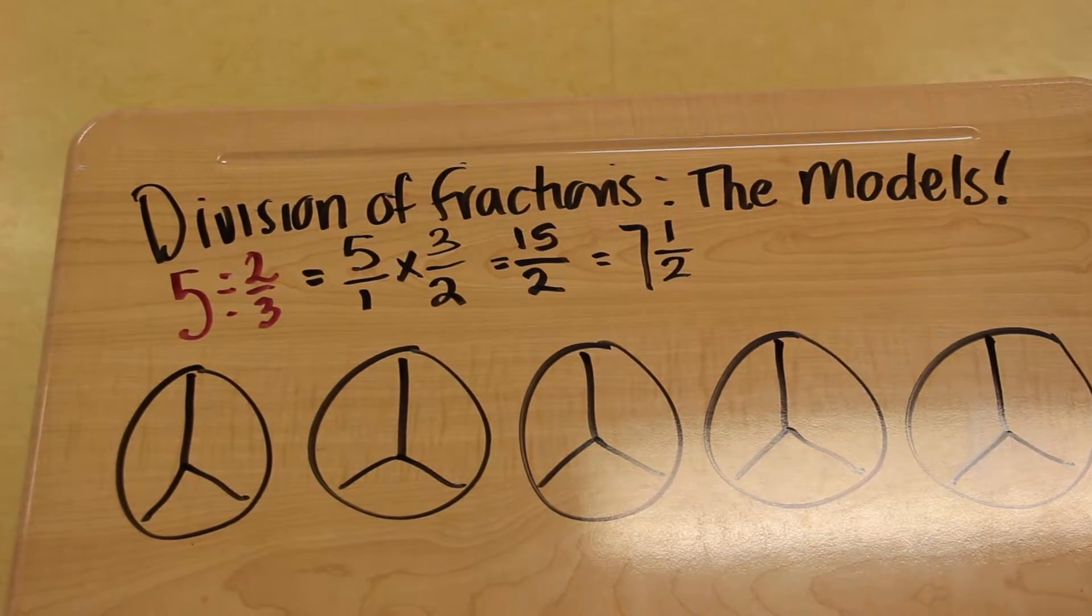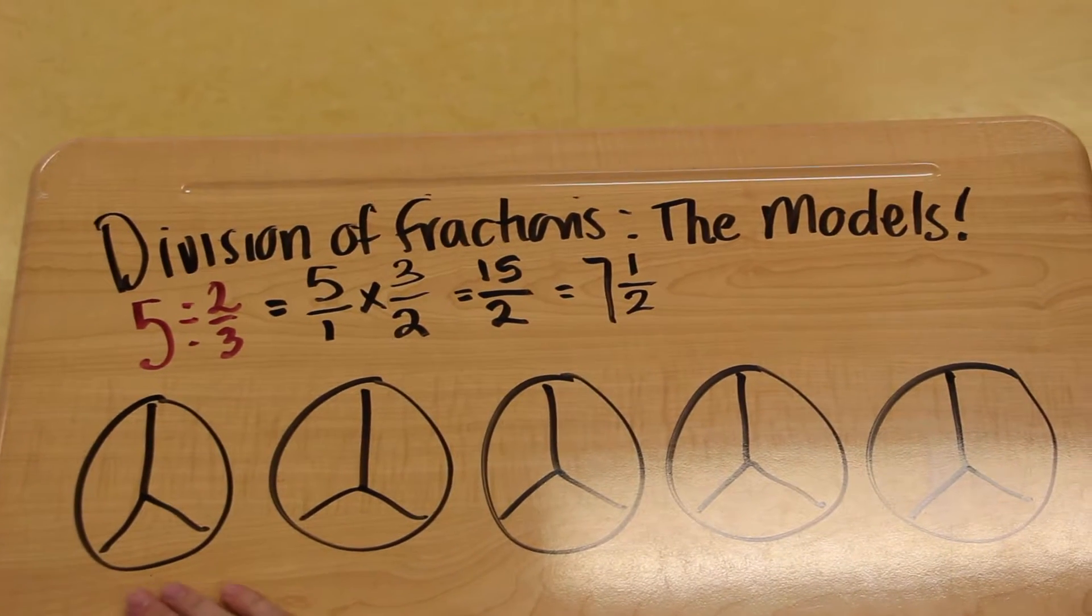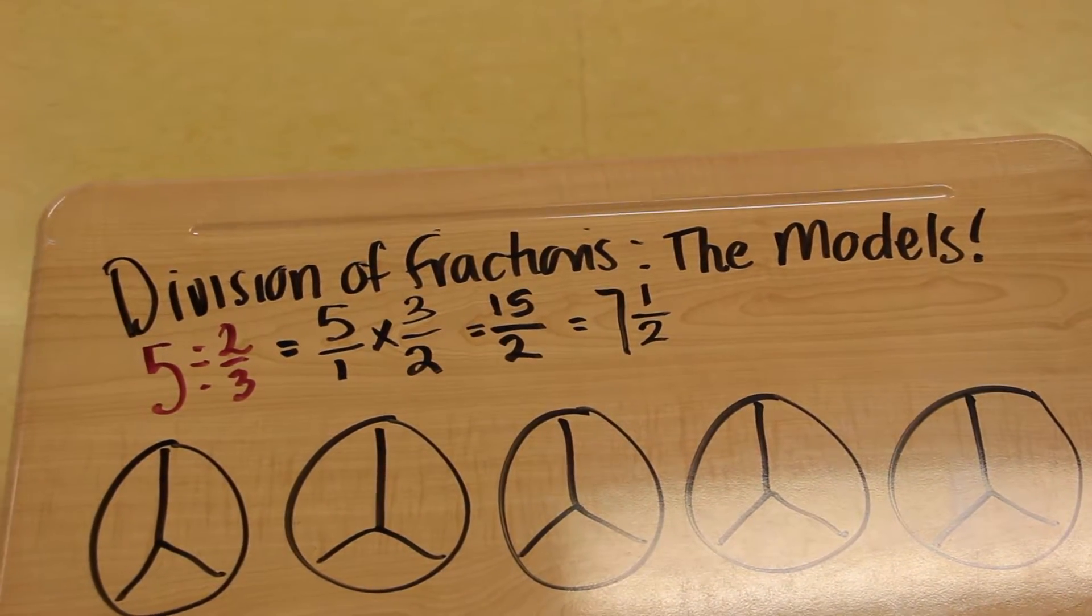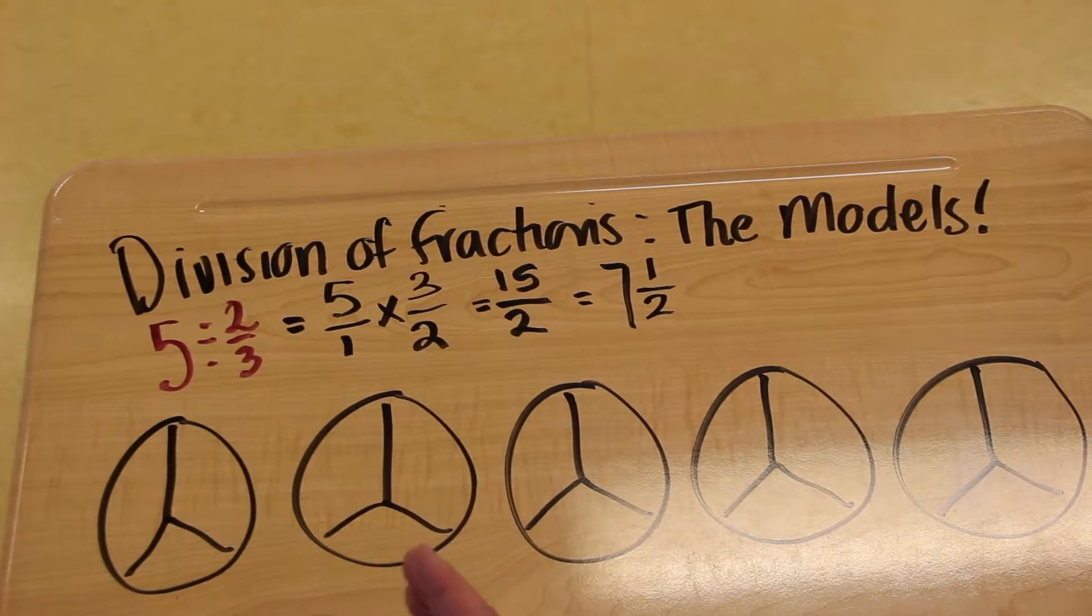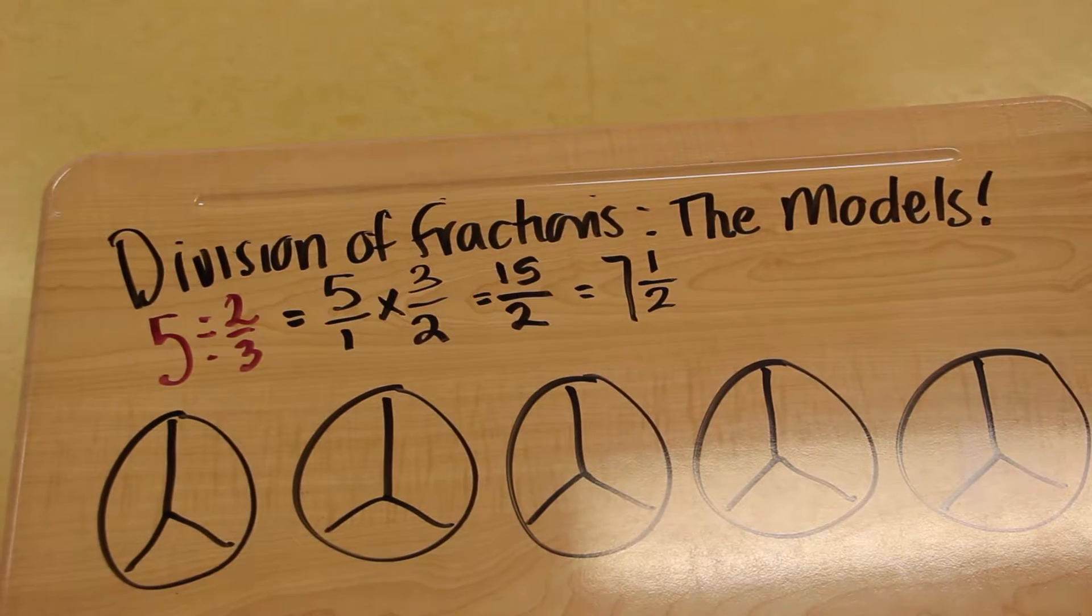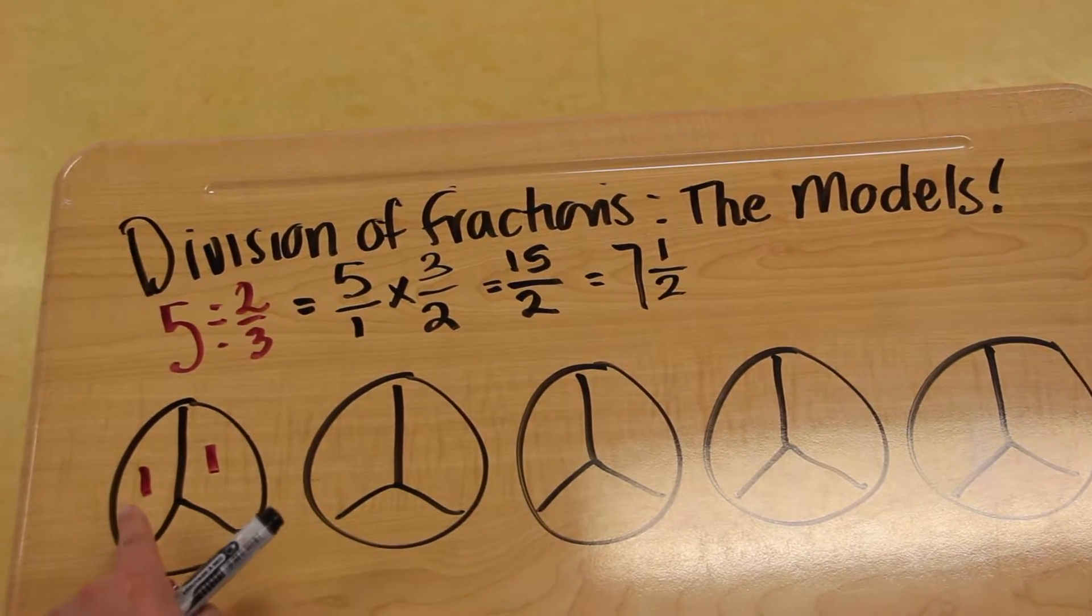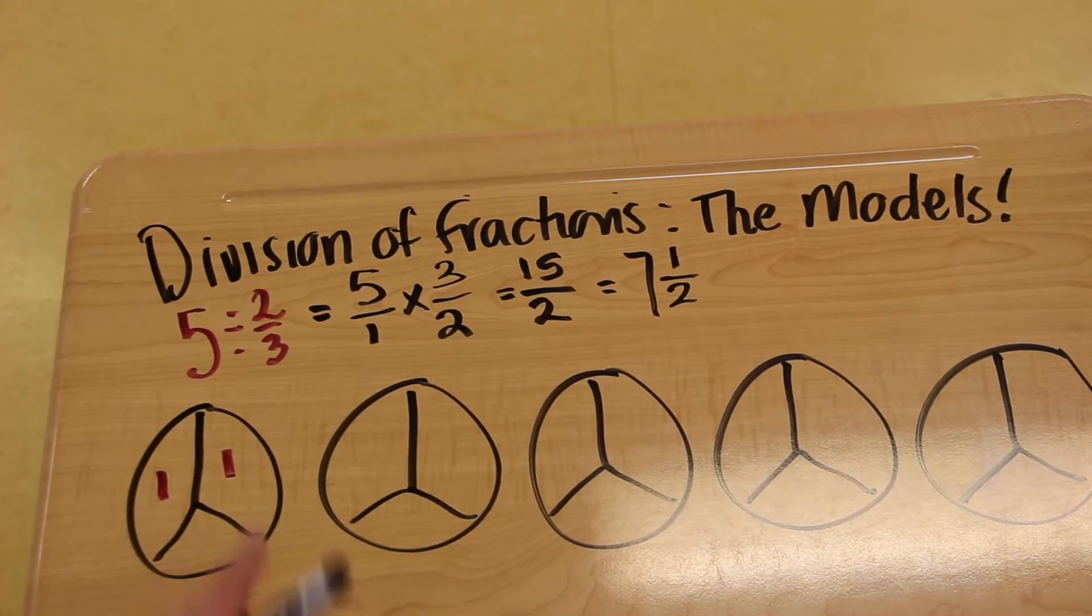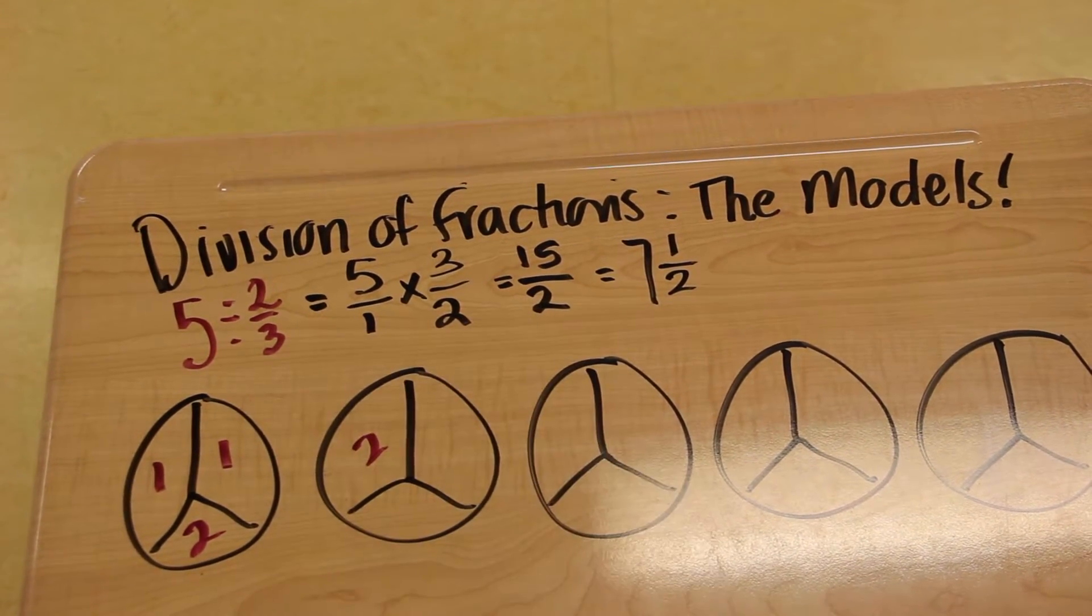And we want to know how many 2 thirds we can get out of 5 wholes. So what we're going to do is count up our 2 thirds. How I would do this is take each 2 thirds and use a number to represent it. So for example, here we have 1 two-third. Here's a third, here's our second third. Okay, so that's 1.